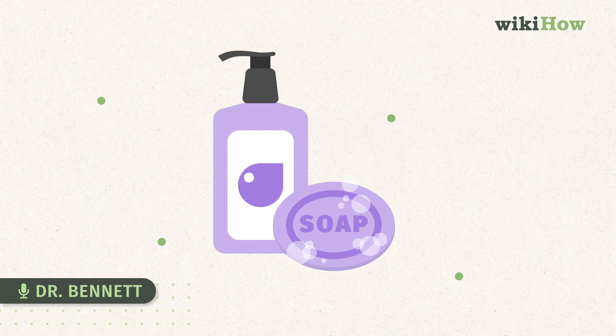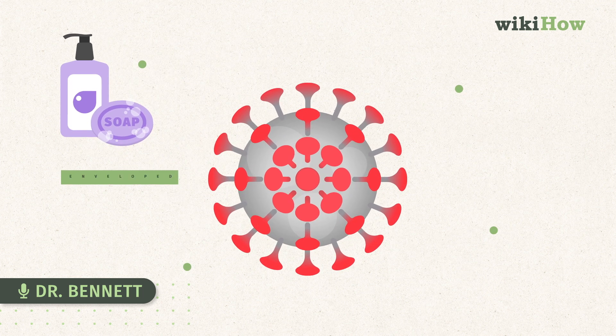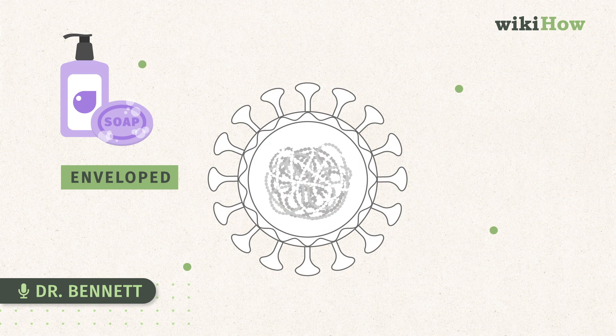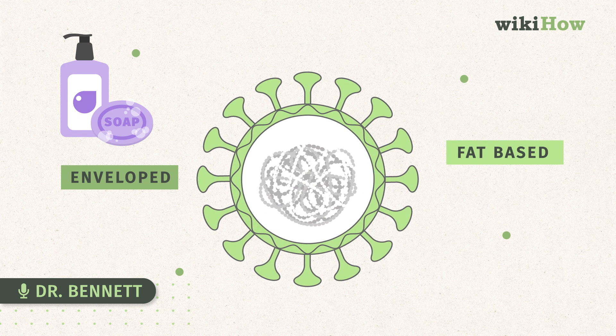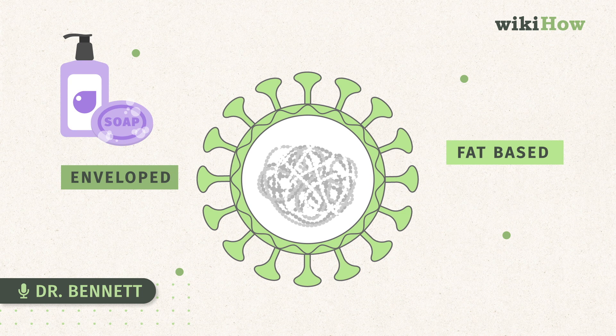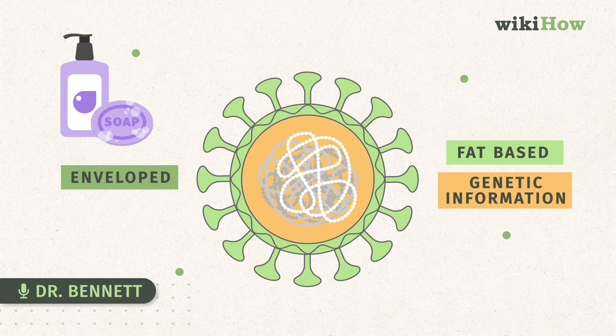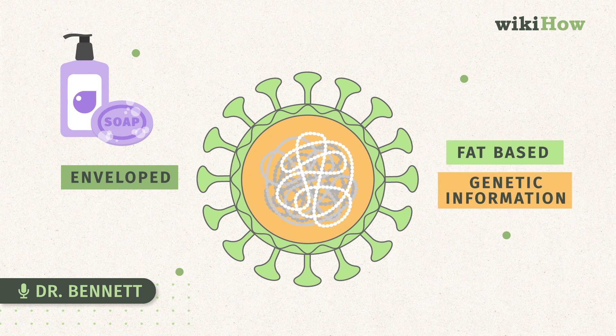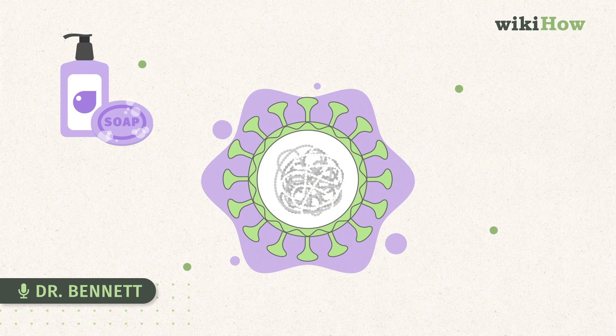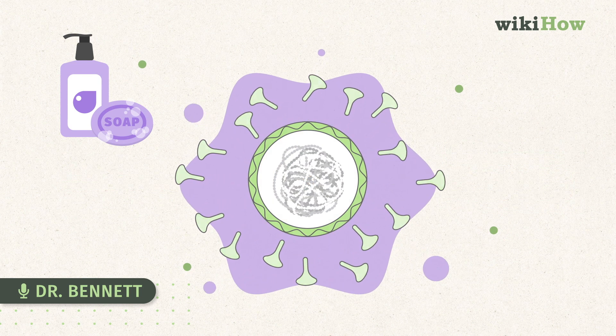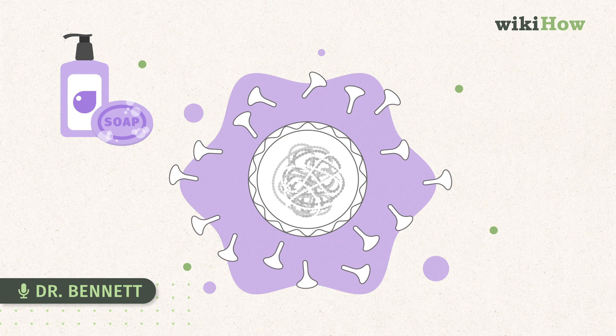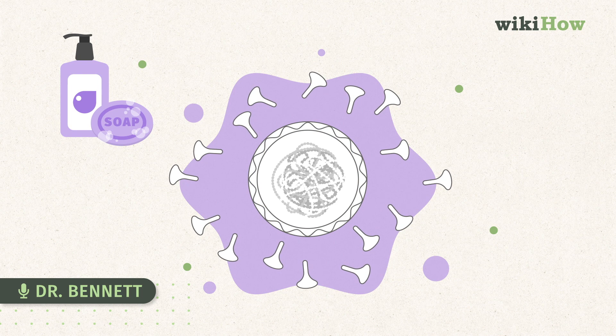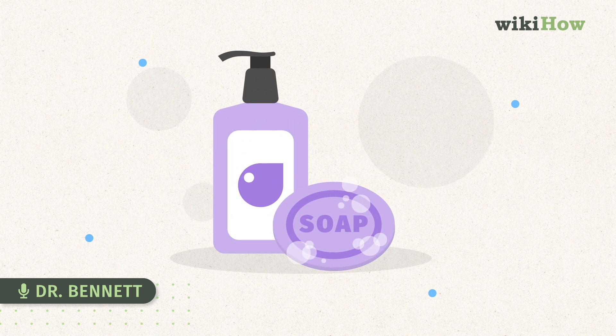The reason why handwashing is so very effective with this virus is because it's an enveloped virus. This envelope is a lipid or fat-based covering of the virus capsule that contains the genetic information. Because it's lipid-based or fat-based, it's actually disrupted by soap. Just like when you wash your greasy pots and pans with soap, you break up the grease, you break up the fat. And so soap kills the virus by breaking up its fatty outer membrane.